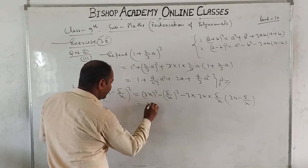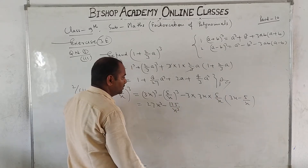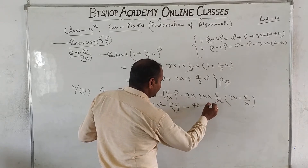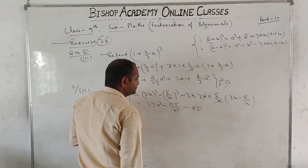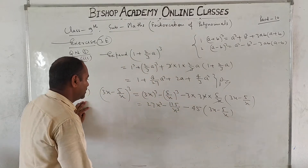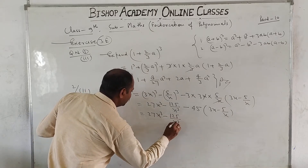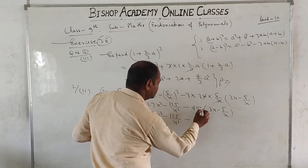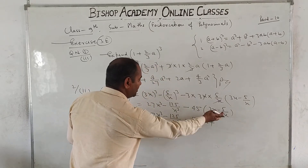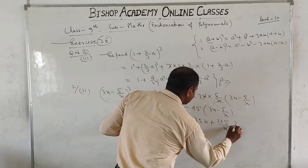Opening the bracket: 27x cube — this is the value — 125/x cube, minus 3; 3 times 9 gives 9, 9 times 5 gives 45, x and x cancel giving only 45. So: 45 into (3x minus 5/x). Simplifying further: 27x cube minus 125/x cube minus 135x plus 225/x. This is the expanded result.